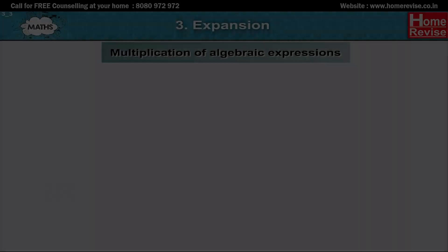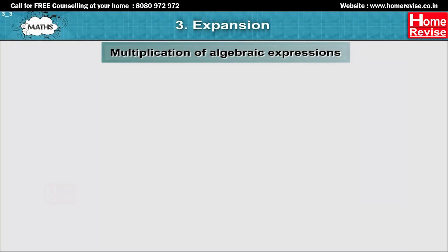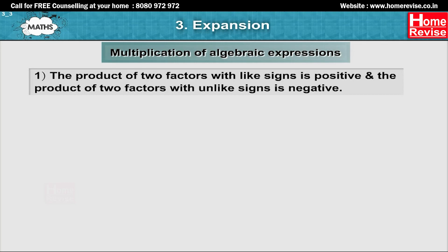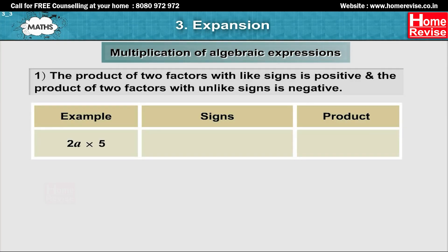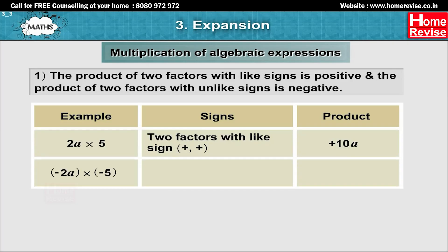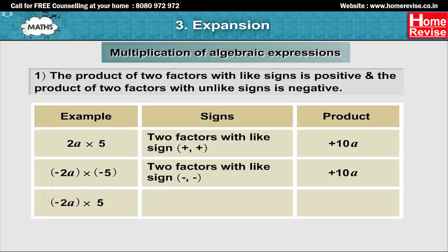Multiplication of algebraic expressions. Rule 1: The product of two factors with like signs is positive and the product of two factors with unlike signs is negative. For example, 2a into 5: two factors with like signs (plus, plus) give a positive product, plus 10a. Minus 2a into 5: two factors with unlike signs (minus and plus) give a negative product, minus 10a.